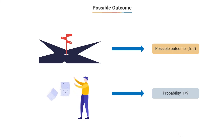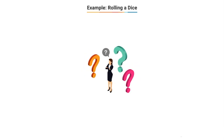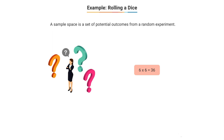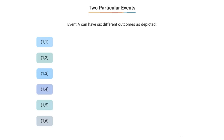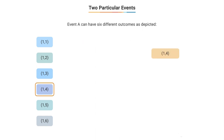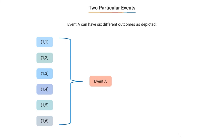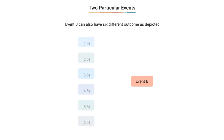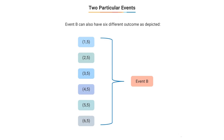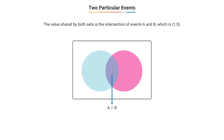Consider two dice rolled simultaneously — there are 36 outcomes in the sample space. Define event A as rolls where the first die shows 1: outcomes are (1,1), (1,2), (1,3), (1,4), (1,5), (1,6). Define event B as rolls where the second die shows 5: outcomes are (1,5), (2,5), (3,5), (4,5), (5,5), (6,5). The intersection of events A and B is the value common to both sets, which is (1,5).